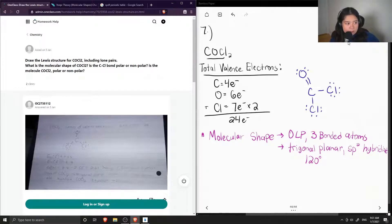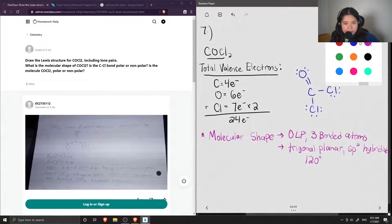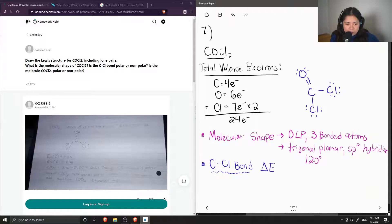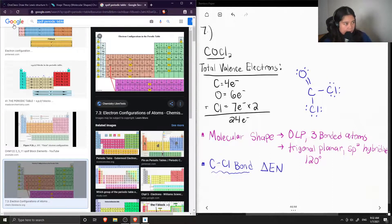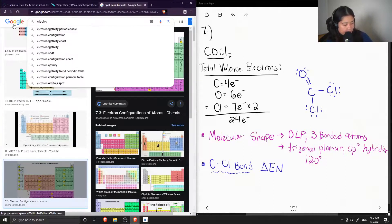And the last, or the third part of the question asks, if the carbon-chlorine bond is polar or non-polar? So to find out whether or not a bond is polar or non-polar, we need to calculate the difference in electronegativity of carbon and chlorine. So let me search electronegativity values.